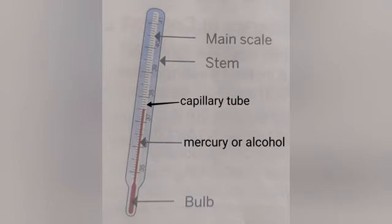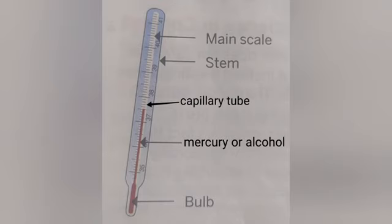Now let us see the construction or the parts of a thermometer. It consists of a long cylindrical glass tube of narrow diameter over which markings are made corresponding to different temperature scales — that can be in degree Celsius, Kelvin, or in degree Fahrenheit. This long cylindrical glass tube is known as the stem. It has a bulb at one end containing a liquid which can be either mercury or alcohol. These two liquids are known as thermometric fluids, which are used to measure the temperature of a body.